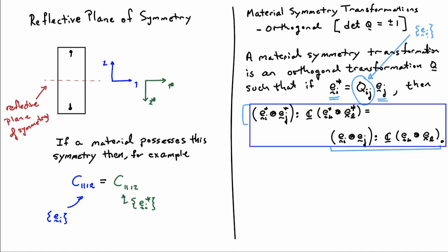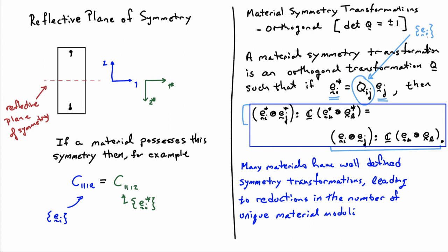This relationship is the requirement for material symmetry. Many materials have well-defined symmetry transformations, and they lead to reductions in the number of unique material moduli. The primary way to infer material symmetry transformations is to perform X-ray scattering, which produces dot patterns from which you can identify rotational and reflective symmetries. Those symmetry elements can then be applied by imposing this requirement — once you've identified Q, you can infer how many moduli are non-zero, how many are equal to each other, and so on.